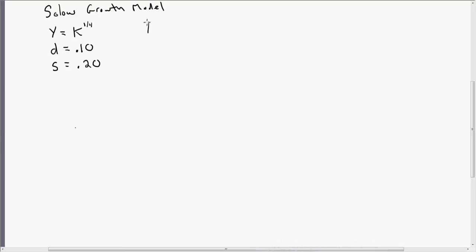First thing we want to do is find the steady state capital labor ratio. The capital labor ratio is represented by K, and you can see it in this production function here.